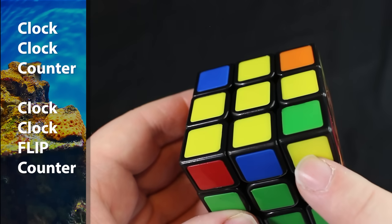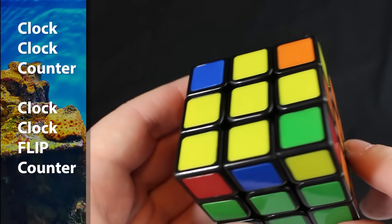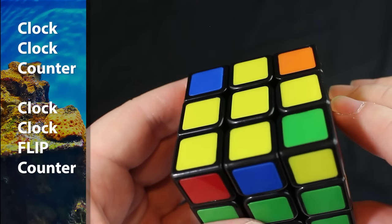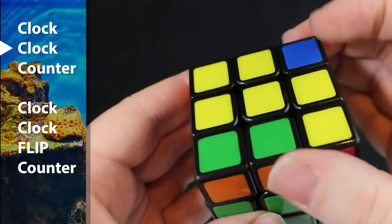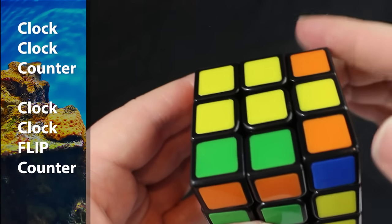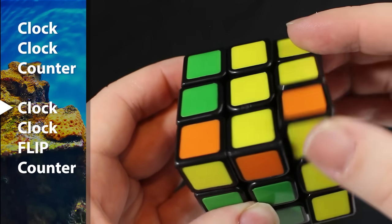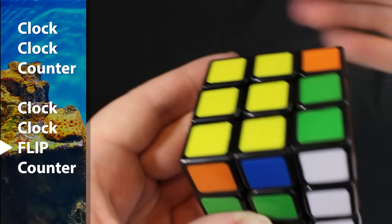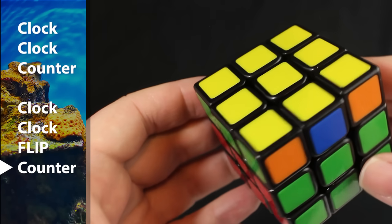Sometimes you get the fish without the fish food. But when you get the fish with the fish food, then you're about to solve. So we do the fish moves once again. Starting on the right, clock, clock, counter, clock, clock, flip, counter. And so we just solved the yellow side.